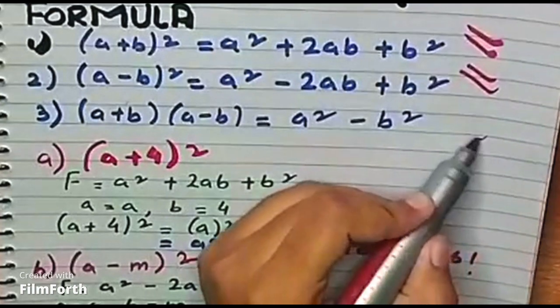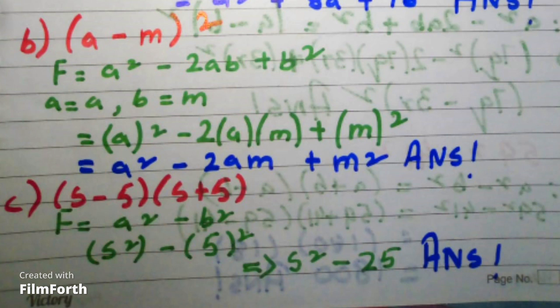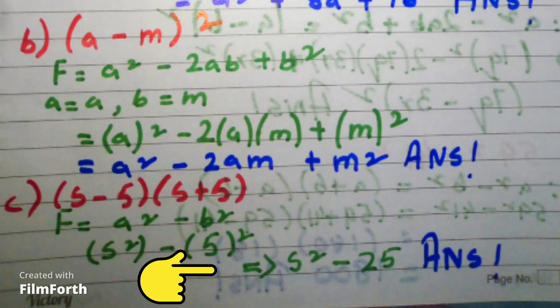For the third one I have an example: (s - 5)(s + 5). The formula is a² - b², which gives us s² - 5², that is s² - 25. This is the answer for the third identity.